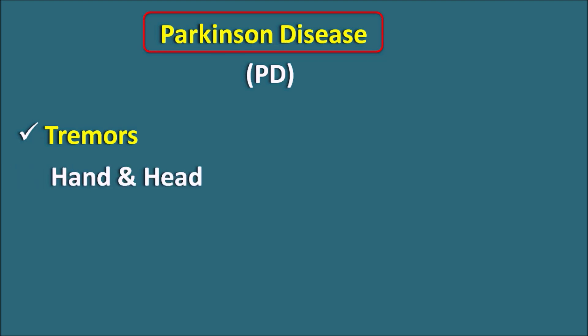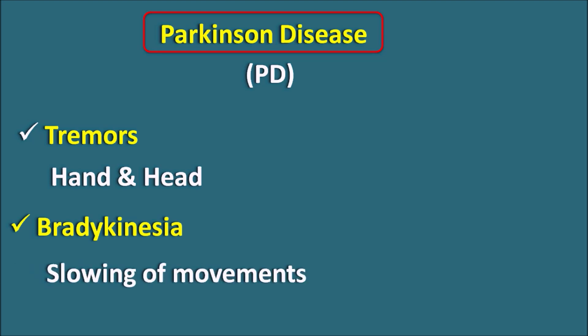What is Parkinson's disease? Parkinson's disease, commonly denoted as PD, is a neurodegenerative disorder which mainly affects the motor functions of the body. In patients who have Parkinson's disease, we can observe motor disorders like tremors. These tremors are observed at rest, so they are called resting tremors, and can be observed in the hand as well as the head. The second important symptom is bradykinesia — brady means slow — so slowing of motor movements can be observed in patients.